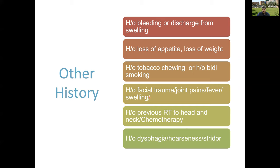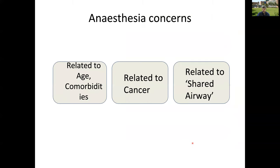We also need to ask about history of facial trauma, joint pains, fever, swelling, history of radiotherapy to the head or neck, and chemotherapy — because these drugs or adjuvant therapy may affect many systemic issues which may force us to change the anesthetic plan. Additionally, history of dysphagia is important.